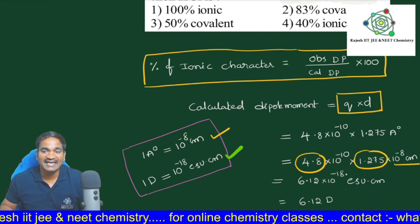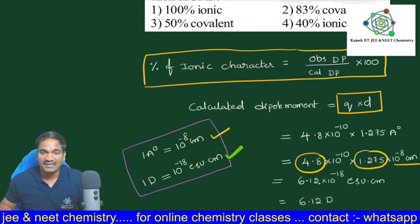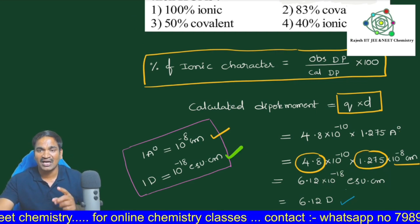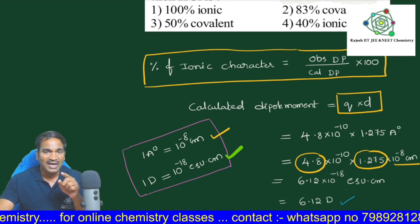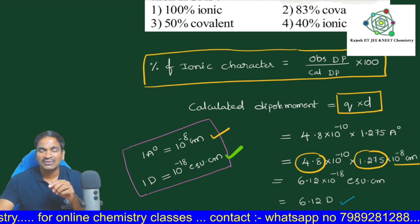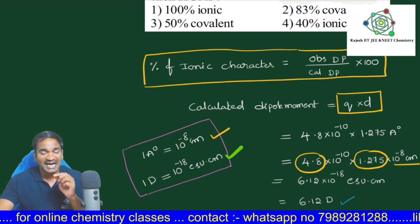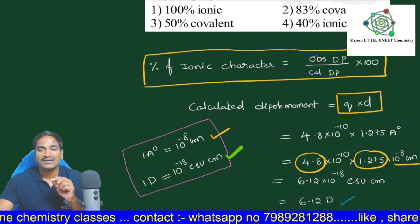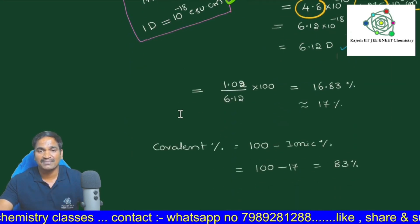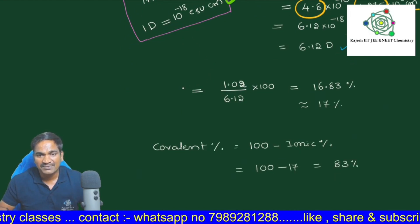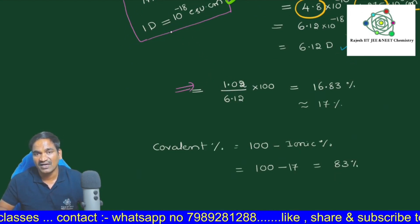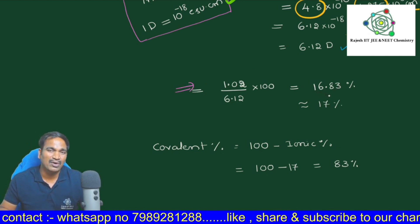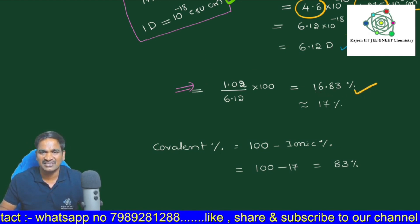So this is calculated dipole moment. Now already in the problem they gave 1.02 observed dipole moment and we calculated 6.12 db. So these two we have to substitute in the first formula. So we substituted in our first formula. Therefore we got 16.83 percentage, which is approximately 17 percentage.